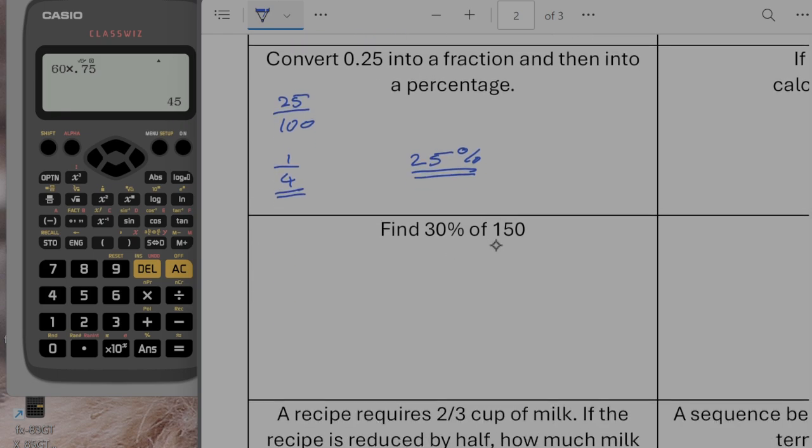Find 30% of 150. So we're going to do 150 times by 30% as a multiplier would be 0.3. So that's going to give us 45.